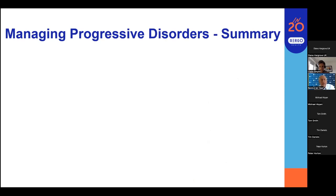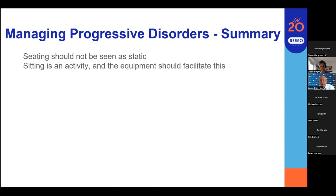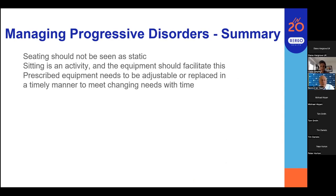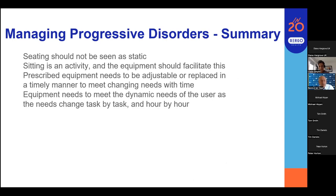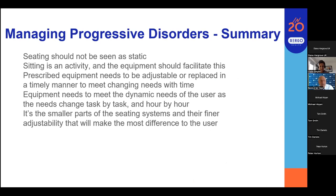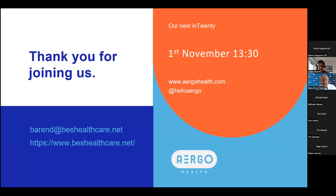In summary: seating should not be seen as static — sitting is an activity and equipment should facilitate this. Prescribed equipment needs to be adjustable and replaced in a timely manner to meet changing needs. Equipment should meet the dynamic needs of the user as their needs change, task by task and hour by hour. The devil is in the detail, and it's the smaller parts of the seating system and final adjustability that will make the most difference. Contact details are on the bottom left. The next In 20 session is due on the 1st of November at 1:30.